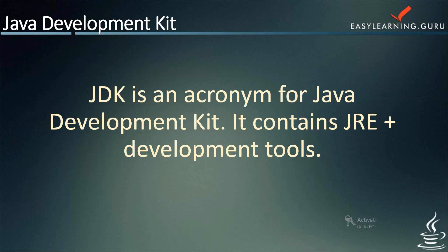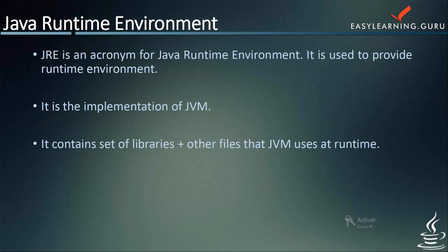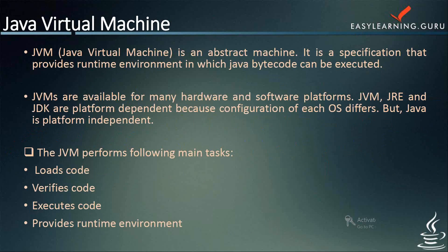Now, what is JRE? JRE is an acronym for Java Runtime Environment. It is used to provide the runtime environment — it is the implementation of JVM. It physically exists and consists of a set of libraries and other files that JVM uses at runtime. JRE, or Java Runtime Environment, is a part of the Java Development Kit — a set of programming tools for developing Java applications. JRE provides the minimum requirement for executing a Java application; it consists of the JVM, core classes, and other supporting files.